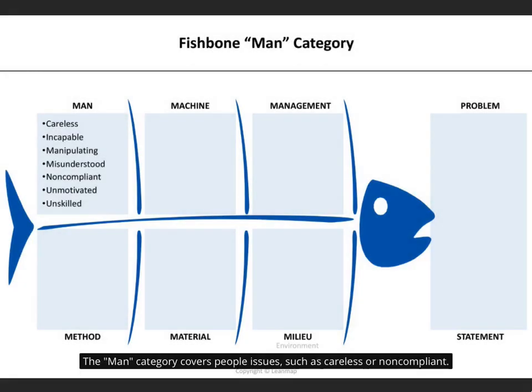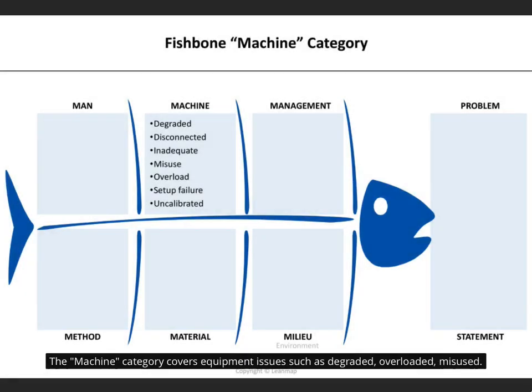The man category covers people issues, such as careless or non-compliant. The machine category covers equipment issues such as degraded, overloaded, misused.